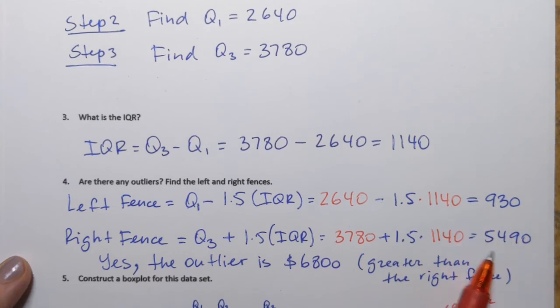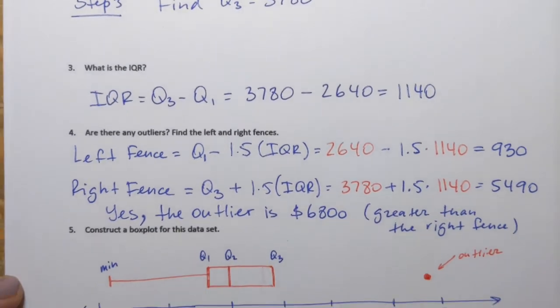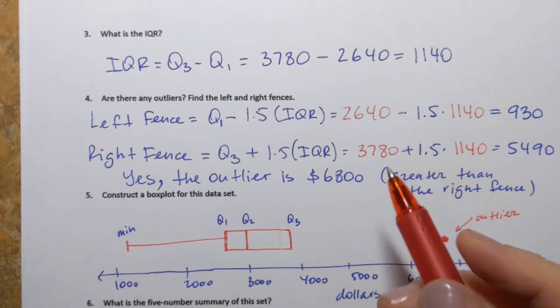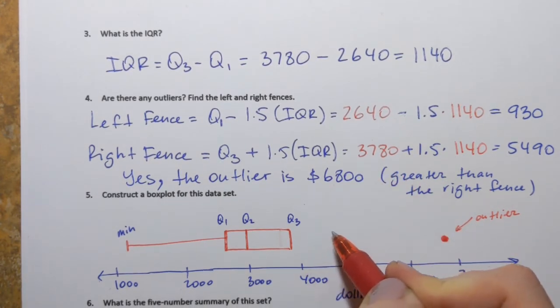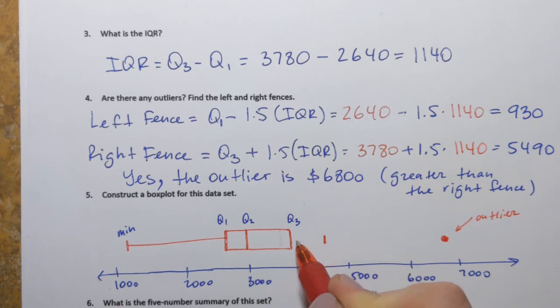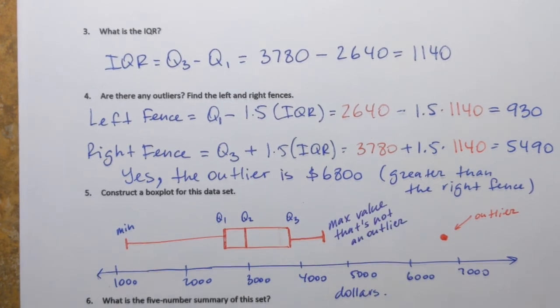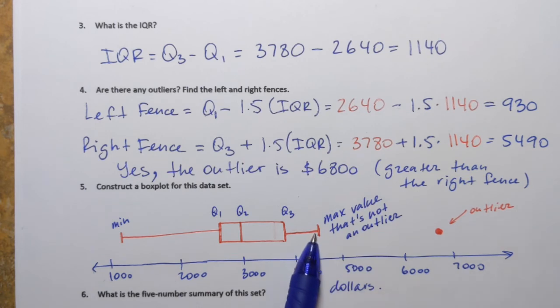Remember, here's the right hand side fence. So 4,511 is probably somewhere over here. So that's going to be the right hand side whisker. So I added a note that this is the maximum value that's not an outlier.